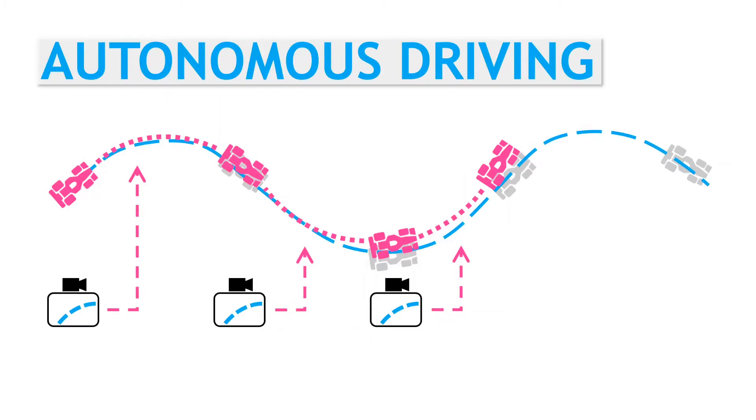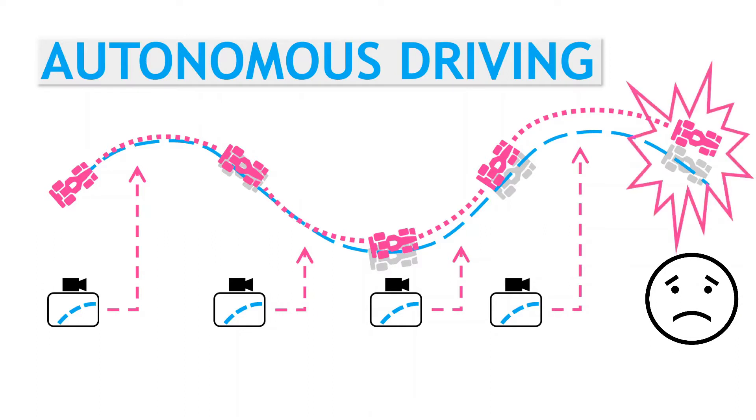The small prediction errors get amplified in the autonomous driver's predict-then-drive closed loop, and the vehicle makes progressively worse driving decisions until it completely veers off the track.